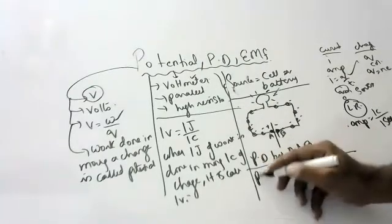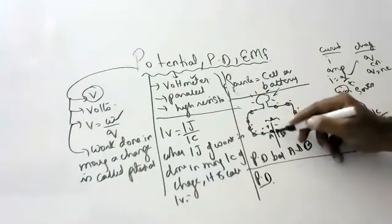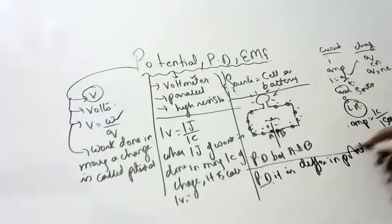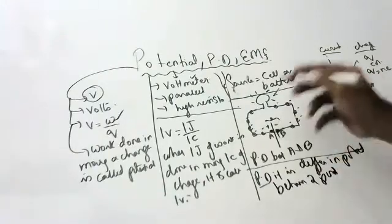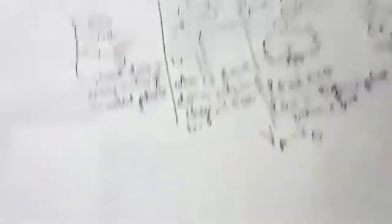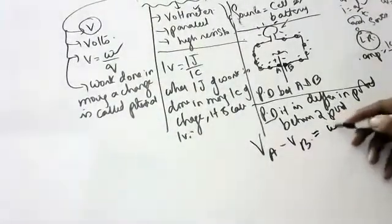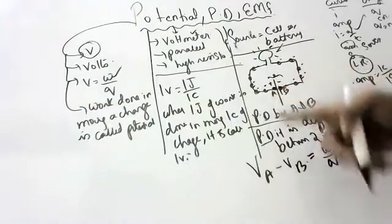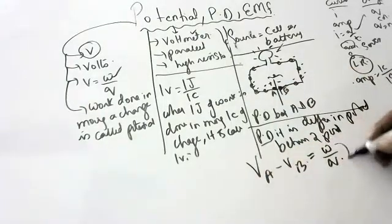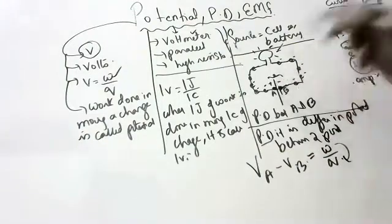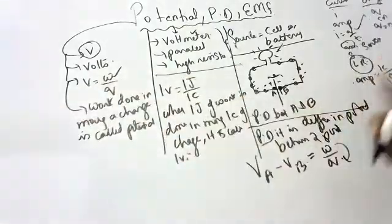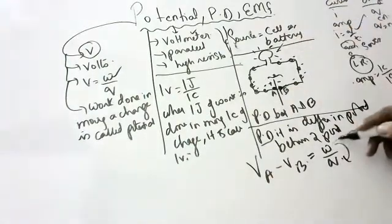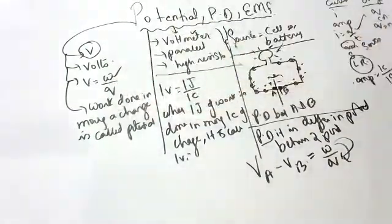What is potential difference? It is the difference in potential between two points. Formula: VA minus VB is equal to W by Q. Who is doing the work? The cell. What work is it doing? It is moving the charge. So the cell or battery does the work of moving the charge — that is called potential. This is potential difference.